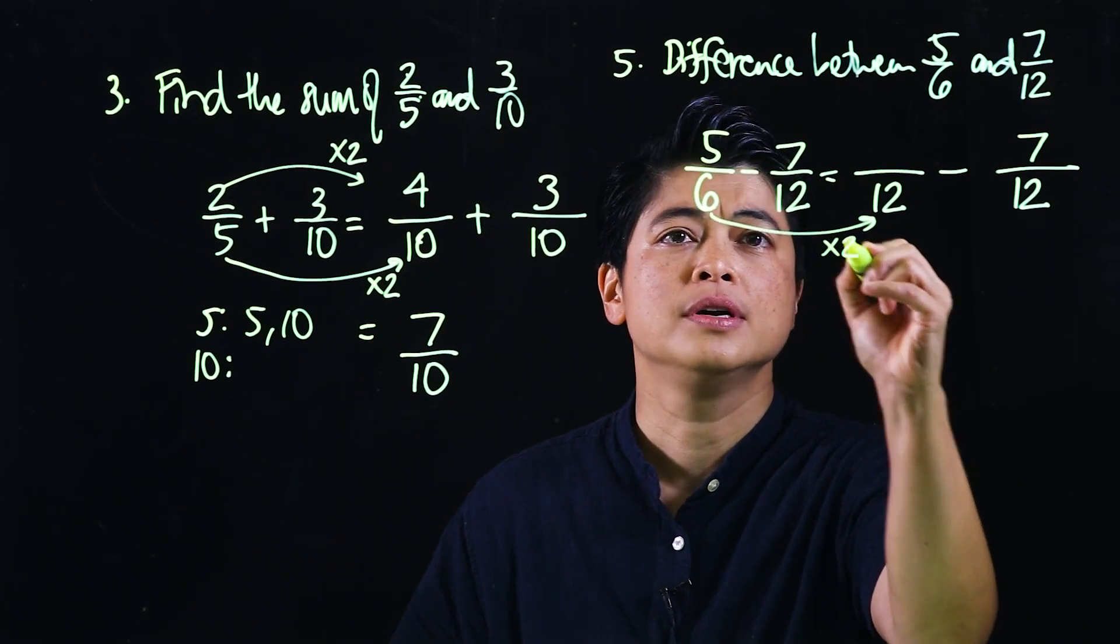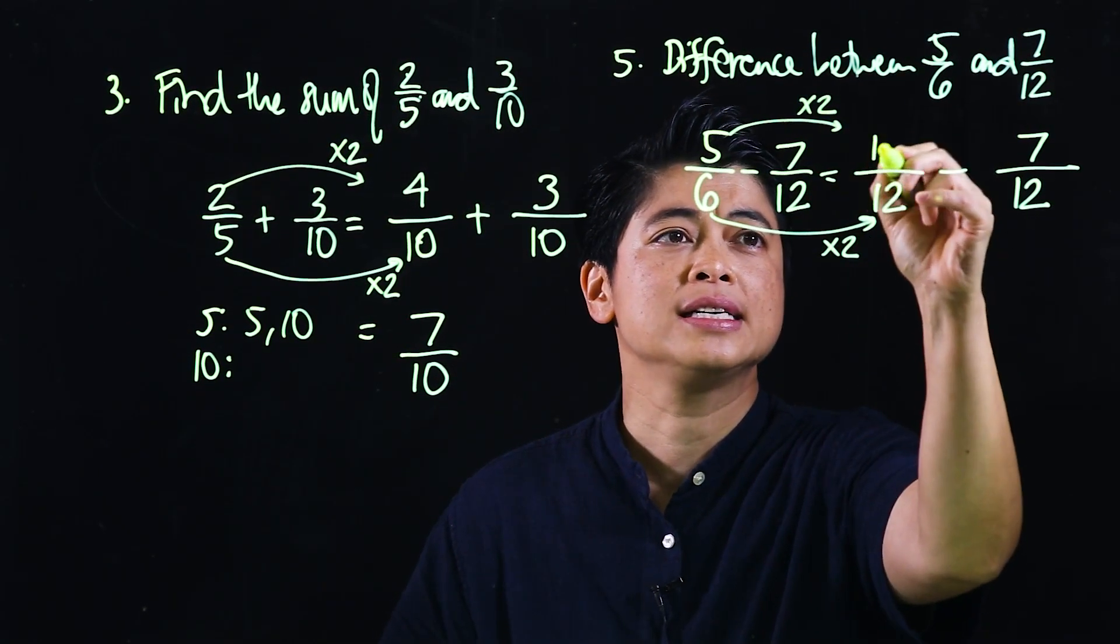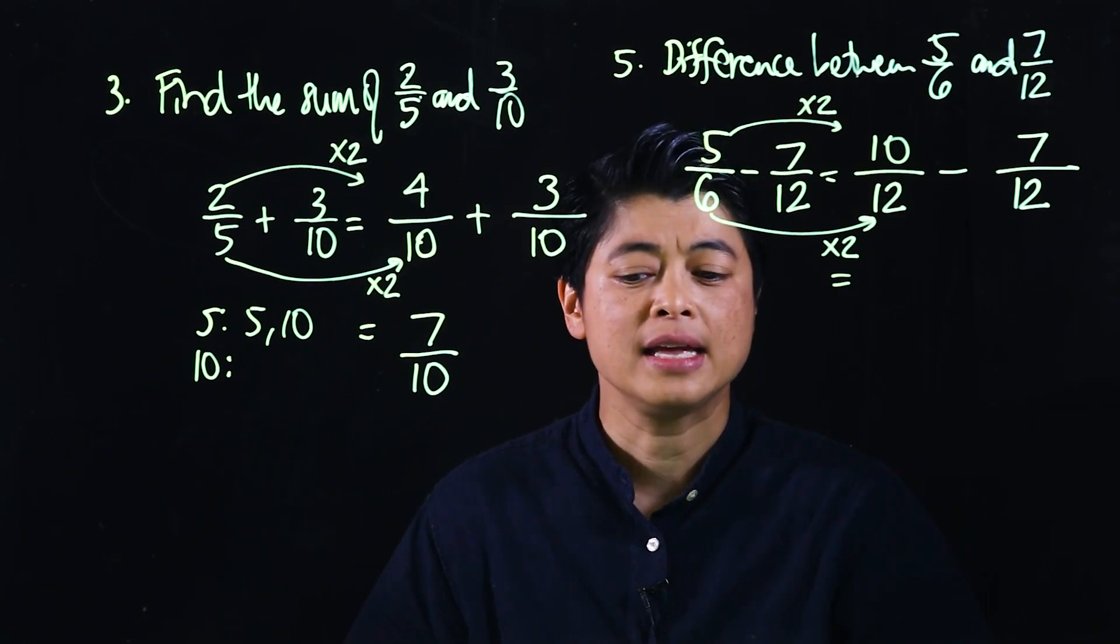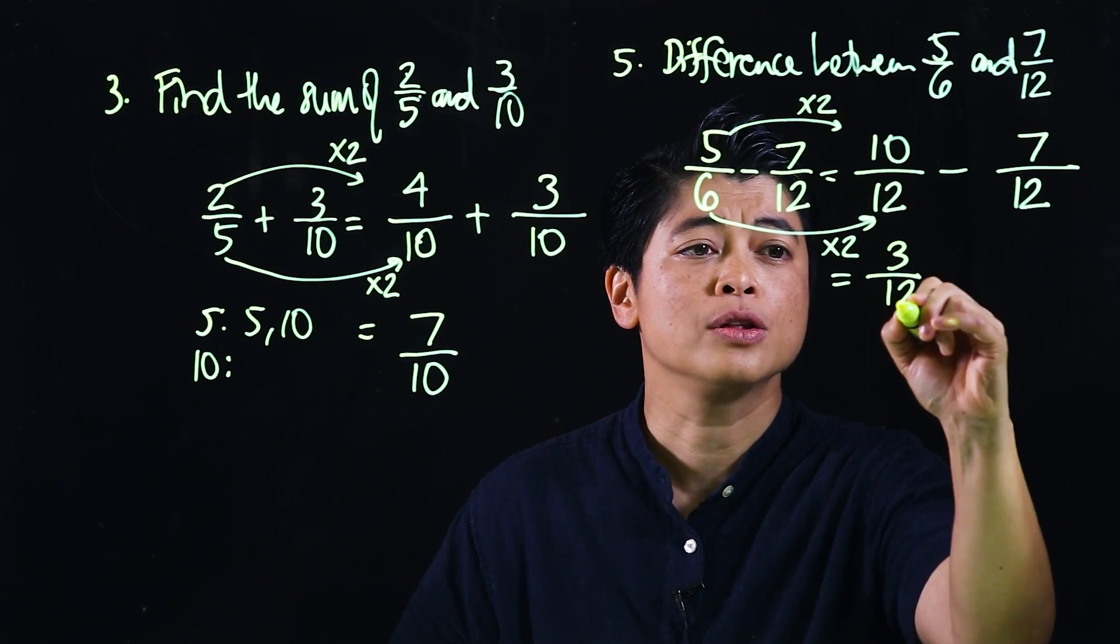This will be 12 and this is already 12, so this is still 7. I need to multiply by 2, which means this is 10. So when I take away, this will be 3 over 12.